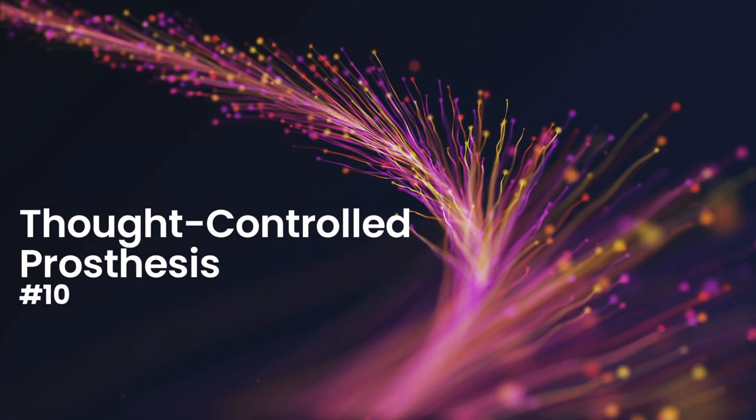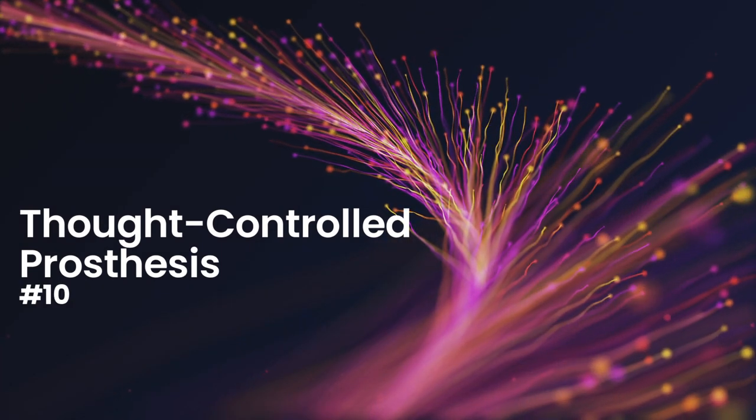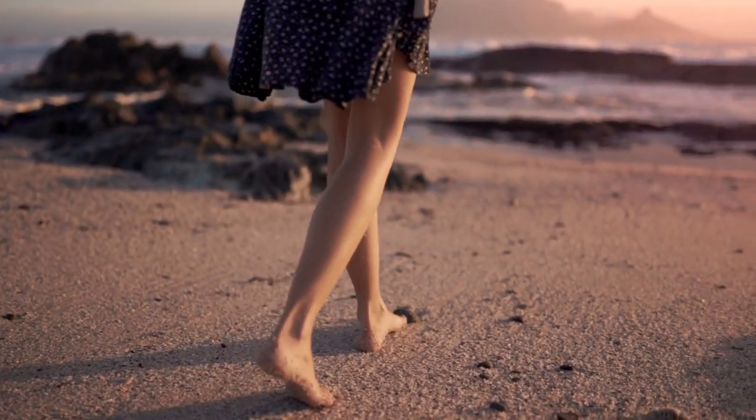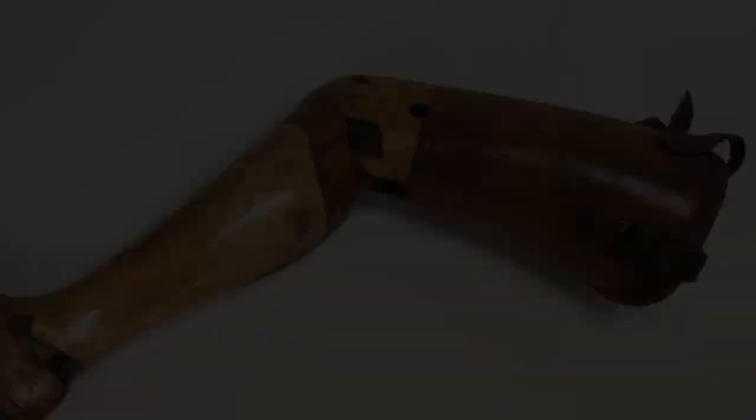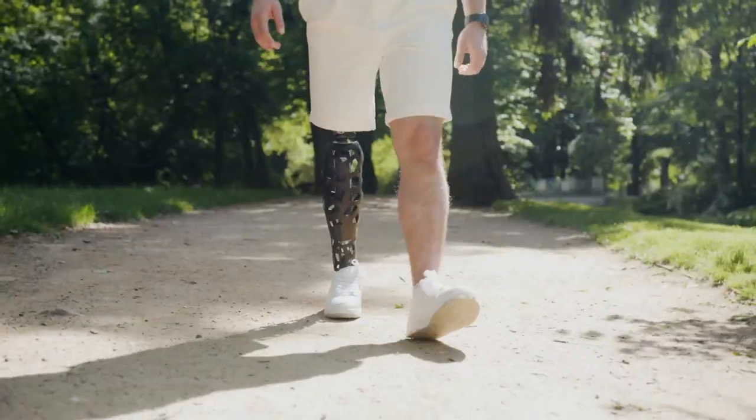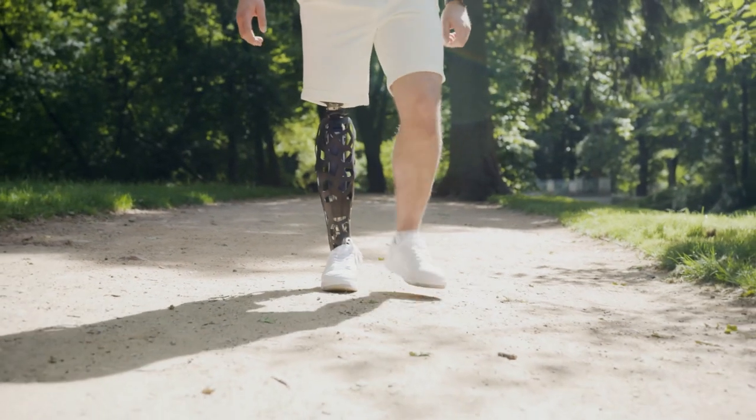Number 10: Thought-Controlled Prosthesis. Throughout history, humans have sought ways to compensate for the loss of limbs. Prosthetic limbs have come a long way from simple wooden structures to advanced devices that closely resemble and function like real limbs.